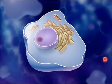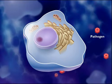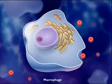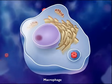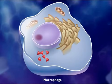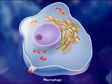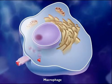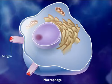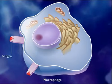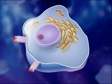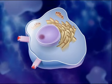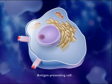Activation of the immune response typically begins when a pathogen enters the body. Macrophages that encounter the pathogen ingest, process, and display the antigen fragments on their cell surfaces. Macrophages with antigen fragments displayed on their surfaces are called antigen-presenting cells.